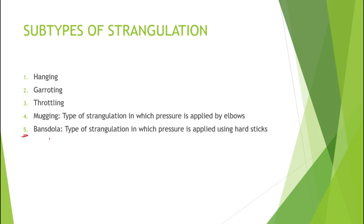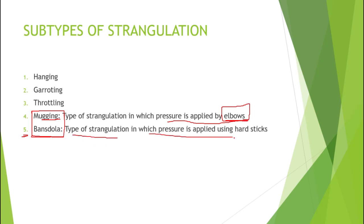Once we go through each in detail it will be easy to recall their names. The most important definitions to take from this slide are the last two, as they are low-yield and will not be repeated. Mugging is a type of strangulation in which pressure is applied by the elbows.